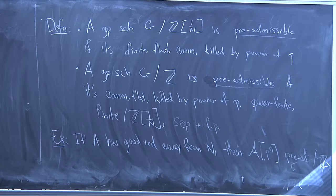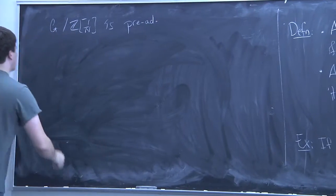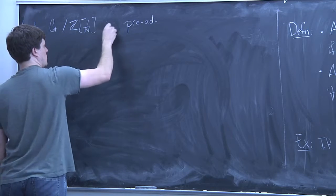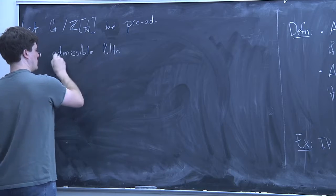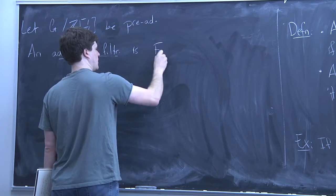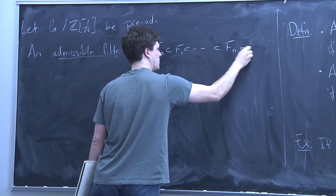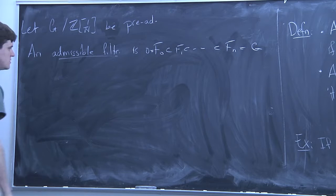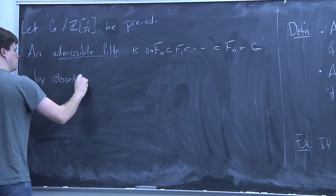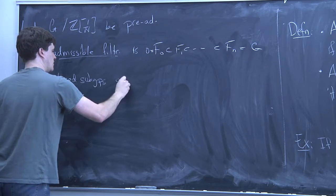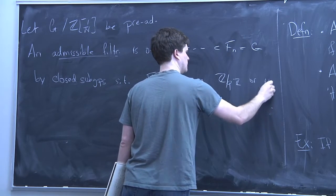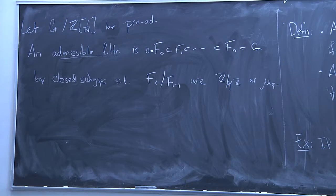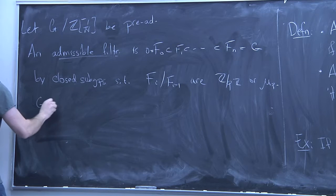The important notion is admissibility. Suppose we have a pre-admissible group G. An admissible filtration is an ascending filtration F_0 ⊆ F_1 ⊆ … ⊆ F_n by closed subgroups such that the successive quotients F_i/F_{i-1} are either Z/PZ or μ_P. We say G is admissible if it has such a filtration.